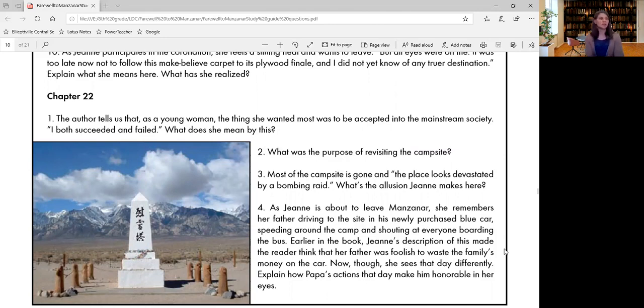And question four, as Jean is about to leave Manzanar, she remembers her father driving to the site in his newly purchased blue car, speeding around the camp and shouting at everyone boarding the bus. Earlier in the book, Jean's description of this made the reader think that her father was foolish to waste the family's money on the car. Now though, she sees that day differently. Explain how Papa's actions that day made him honorable in her eyes.